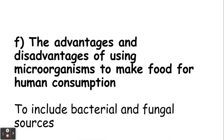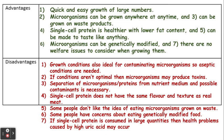Now we need to be aware of the advantages and disadvantages of using microorganisms. The key advantages include those already mentioned. More specifically regarding quorn and bacteria: it's quick and easy to generate this food, the protein in quorn is healthier with a lower fat content, and it can be made to taste like pretty much anything you cook it with. The microorganisms used can be genetically modified, and there are no particular welfare issues to consider whilst growing them.